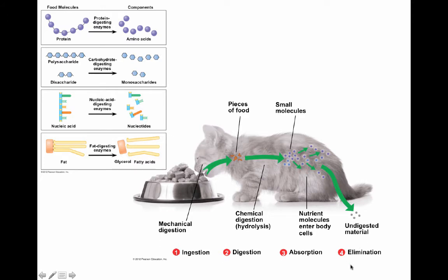Finally, there is elimination, where undigested material is released from the body — either out a second opening, the anus, or back out the initial opening, like in a planaria where food goes in and out the same opening in a gastrovascular cavity.